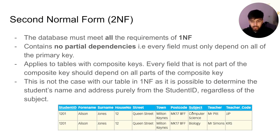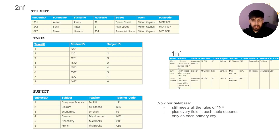This is not the case, as the student's name and address can be determined from purely the student ID regardless of the subject. In this table, student ID and subject are composite keys — the name is dependent on the student ID, but doesn't really depend on the subject. To fix this, we introduce a new table which is only to do with students, and we also create a 'takes' table so that there's no repeating data.